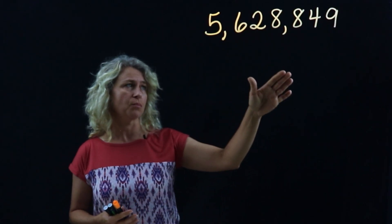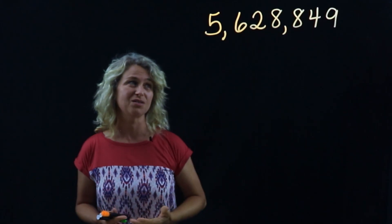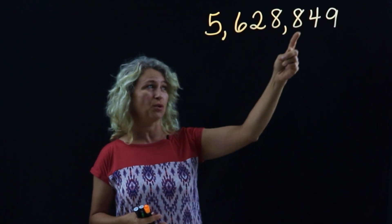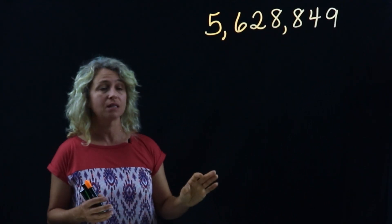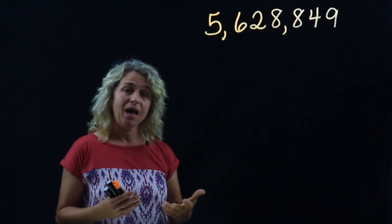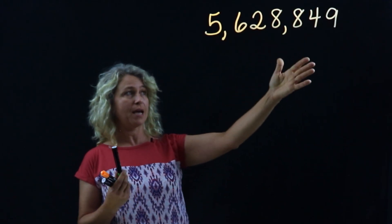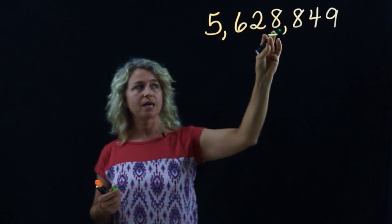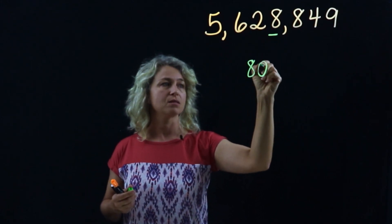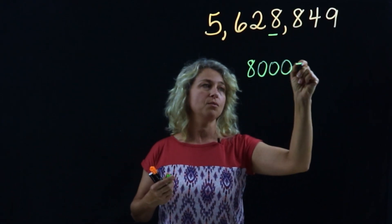Now let's look at another example. This number has a digit in the millions. Let's read it: five million six hundred twenty-eight thousand eight hundred forty-nine. Previously we talked about how the digits have to be the same. Do you notice which two are the same? Yes — the eights! Let's look at the value of this particular eight.